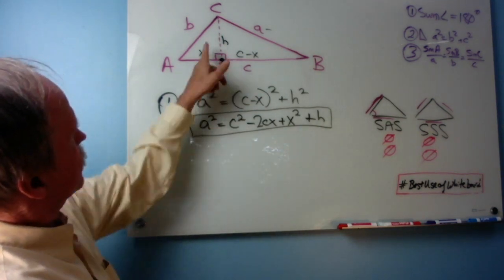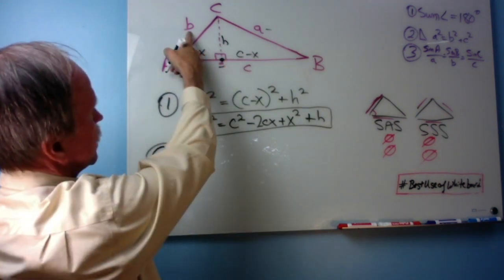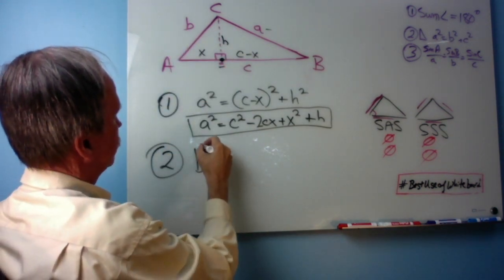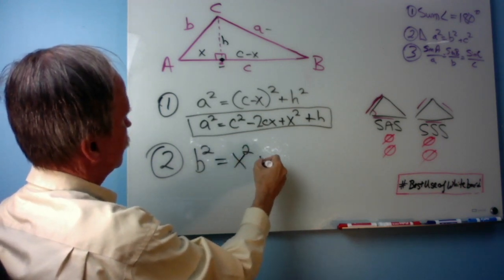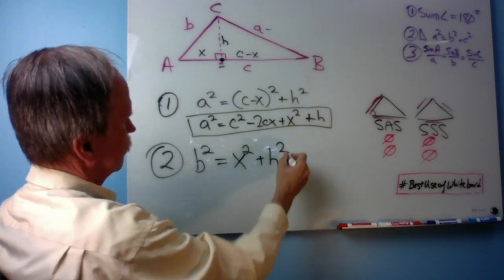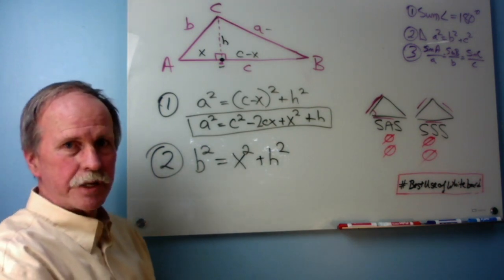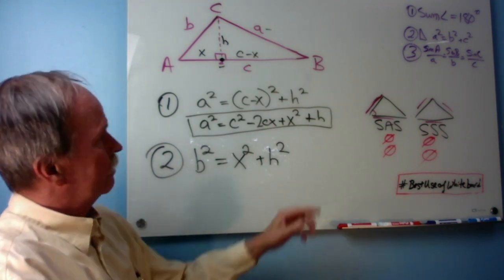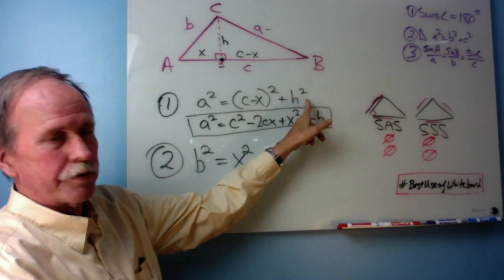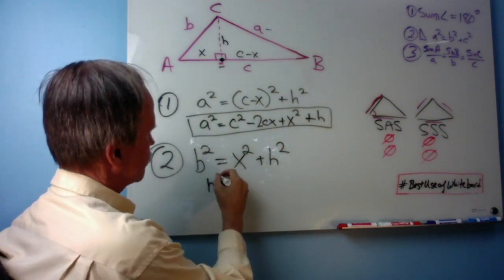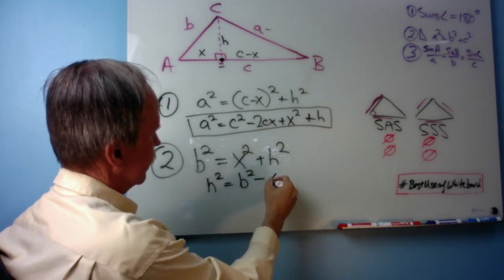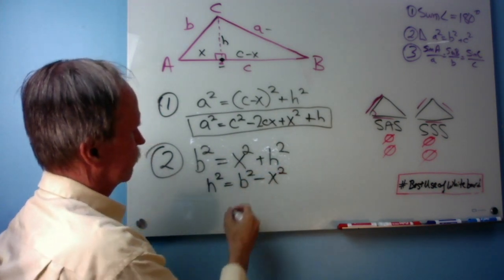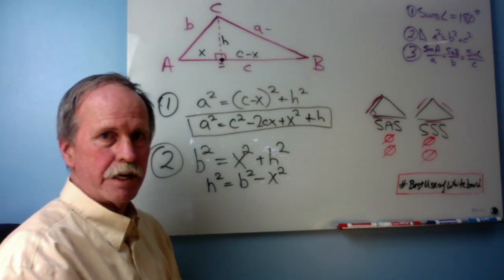Okay? Now, let's go over to this triangle right here. That's the hypotenuse. B squared equals X squared plus H squared. Boy, that's kind of interesting, isn't it? Now, I notice that I have an H squared over here. I'm thinking that H squared equals B squared minus X squared. Does that make sense to everyone? See how I rearranged it?